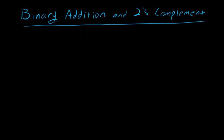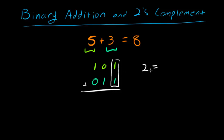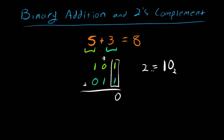Let's try something a little harder: 5 plus 3, which should equal 8 in base 10. We already know 5 in binary is 1 0 1, and 3 in binary is 0 1 1. Looking at the first column, we instantly have a problem: 1 plus 1 equals 2, which is 1 0 in binary. We can't fit 1 0 into a single digit space, so we take the rightmost digit, which is 0, and move it down under the first column. That leftover 1 gets carried to the next column to the left.